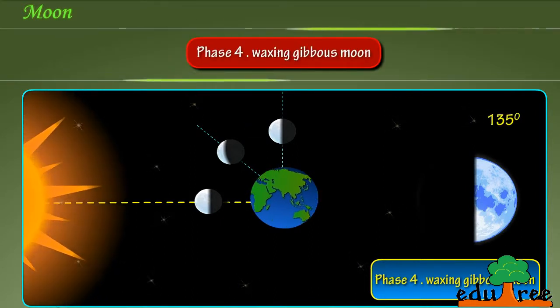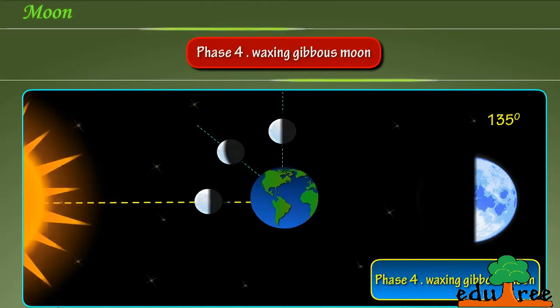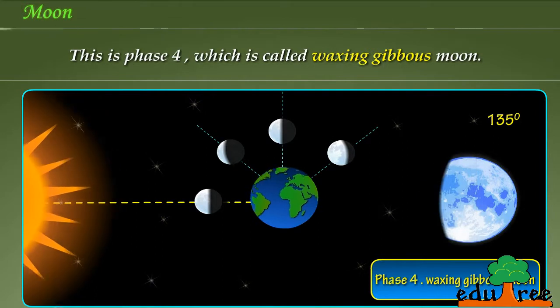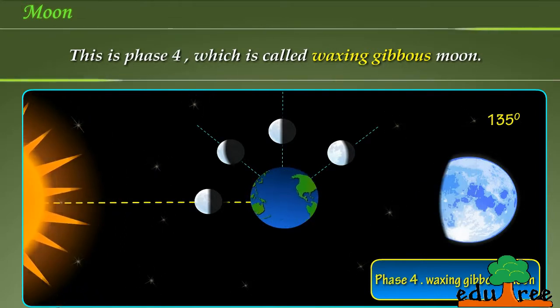Phase 4: Waxing gibbous moon. This is phase 4, which is called waxing gibbous moon.